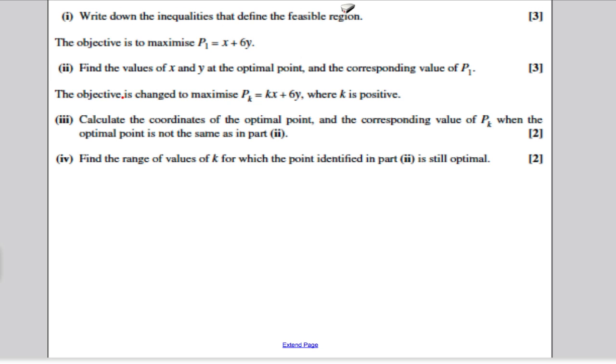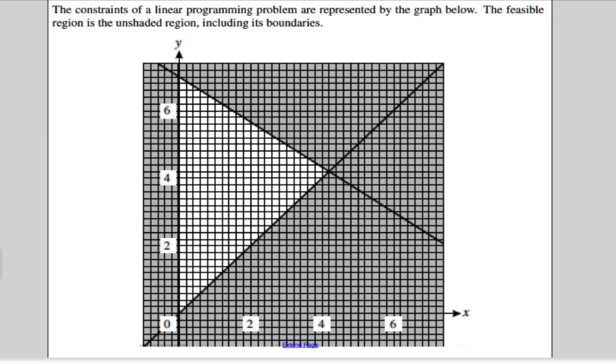Part 1 asks you to write down the inequalities that describe the feasible region. Let's just make clear the feasible region is including the boundaries, everything in the boundaries and inside what I've just drawn here. So the key to defining the feasible region is to define the lines that bound that triangle.